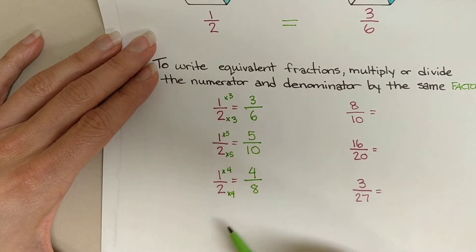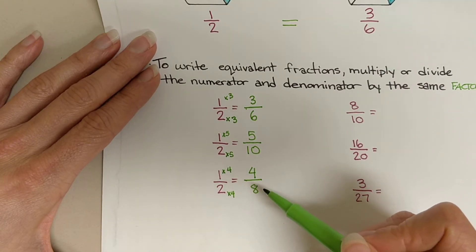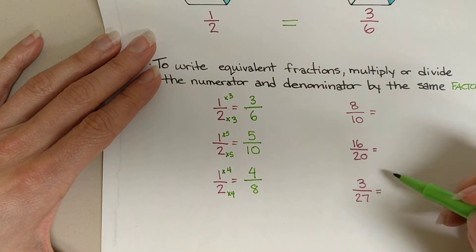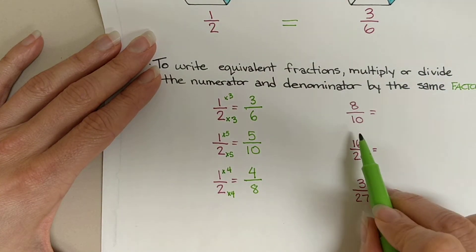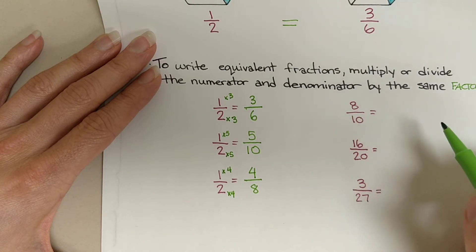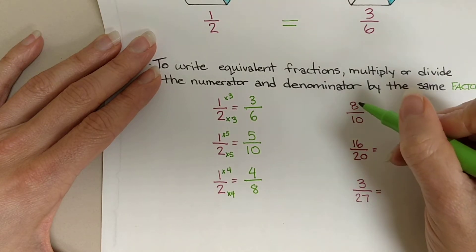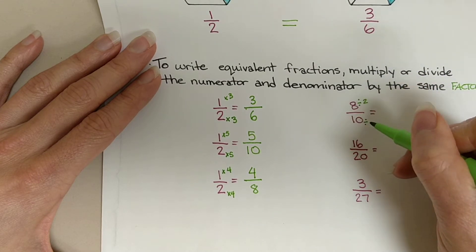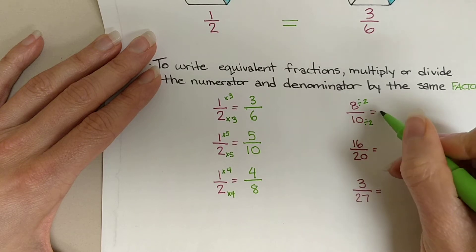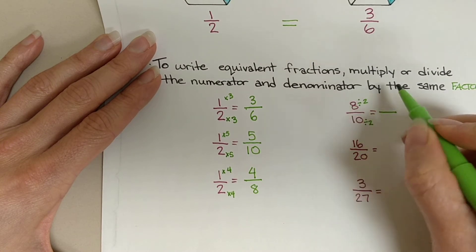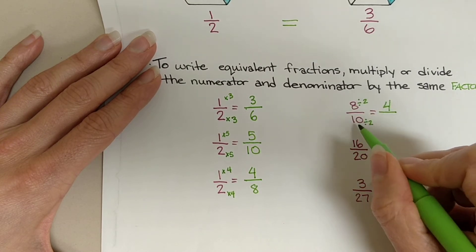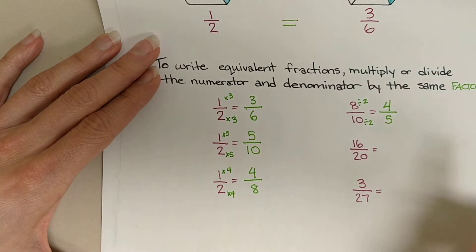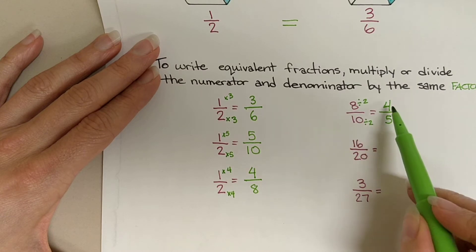Now, for each of those, we were multiplying by a factor. We can also divide by a factor to create an equivalent fraction. Over here, I've got some examples where we could divide. For the first one, we have eight tenths. We could divide them both by two — I know they're divisible by two because they're both even numbers. Eight divided by two gives us four, and ten divided by two gives us five. So four fifths — we can say that eight tenths is equivalent to four fifths.